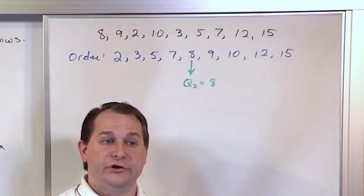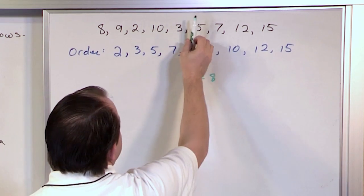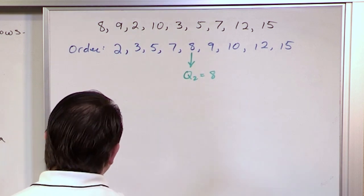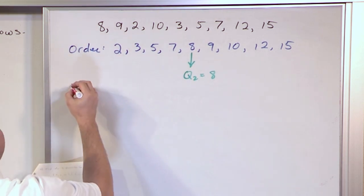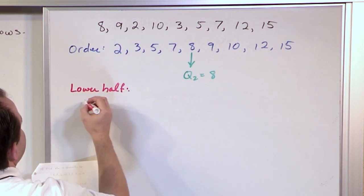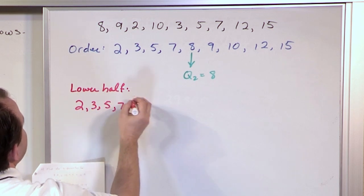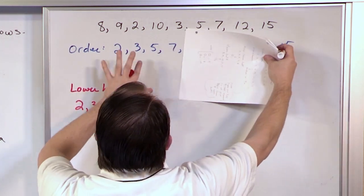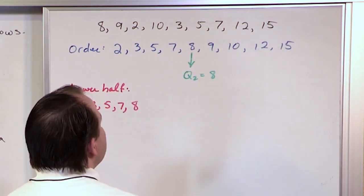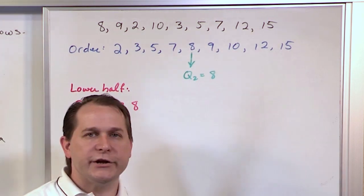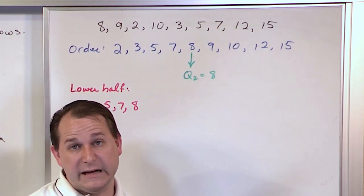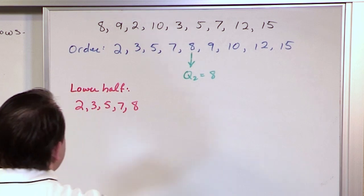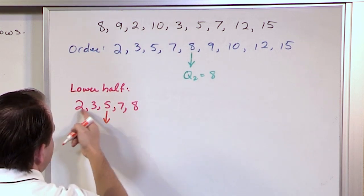Now whenever we try to find Q1 or Q3, this median divides the data set into a lower half and an upper half. For the lower half, in order to find Q1, we look at 2, 3, 5, 7, and we need to include 8 because the data is cut into two pieces. When you have an odd number of values in your data set, the middle number is your median and you need to include it in both the upper and the lower half. That's the convention we choose. So now here's our lower half. We look for a median value — the 5 is the median of what's in here. So this is Q1.